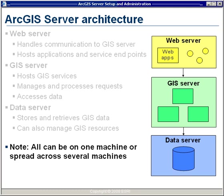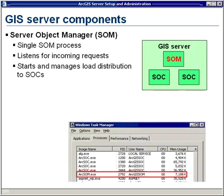While it's possible and quite common to have all these tiers on one machine, you can also spread them across several machines to help with load distribution, availability, and redundancy. Before we move on, I'd like to take a closer look at the GIS server. While it can logically be considered a black box, the GIS server actually consists of two internal components. The first is the Server Object Manager, or SOM. For every instance of ArcGIS Server you will have a single SOM process, as seen in Task Manager. The SOM is the manager of the instance and is not a very heavyweight process.